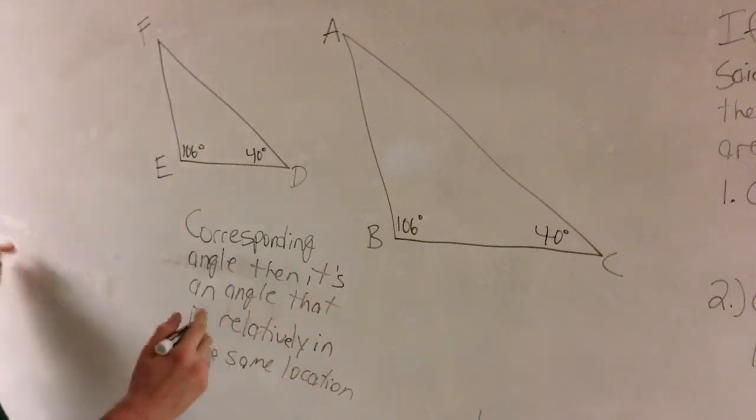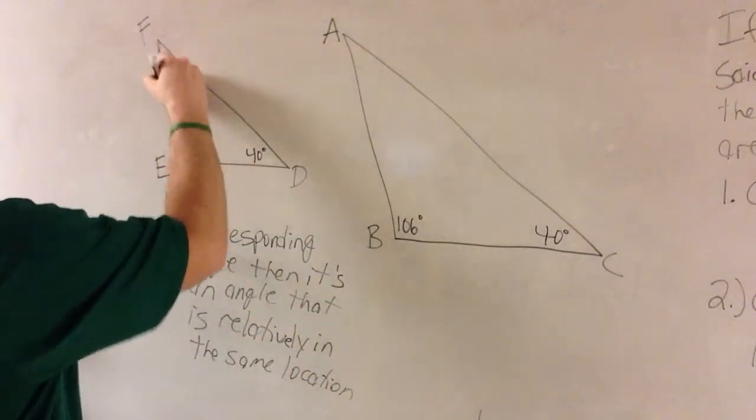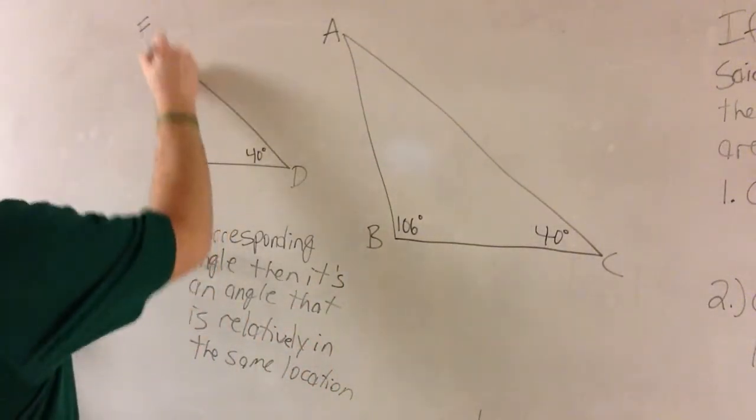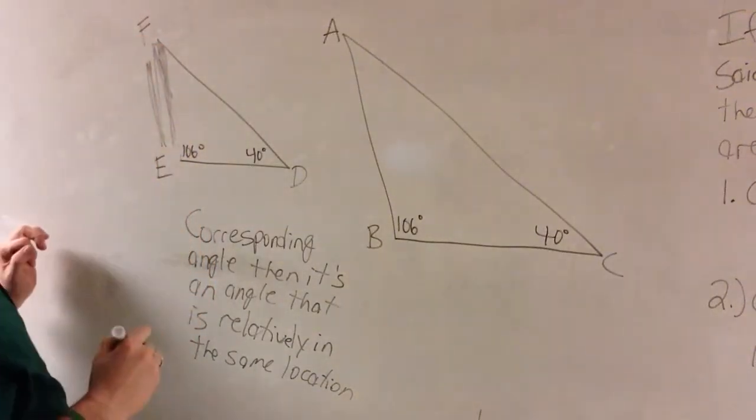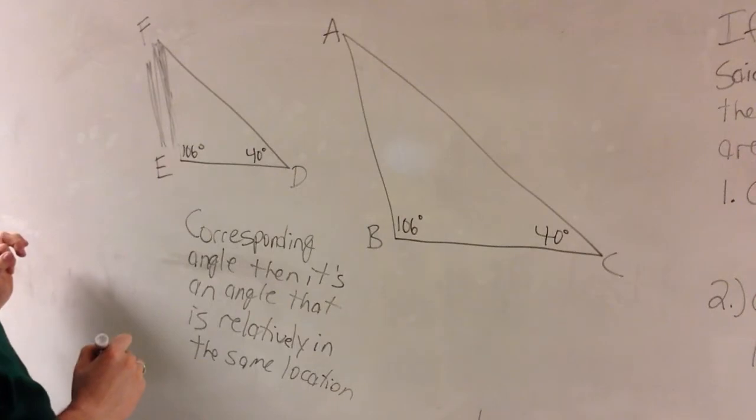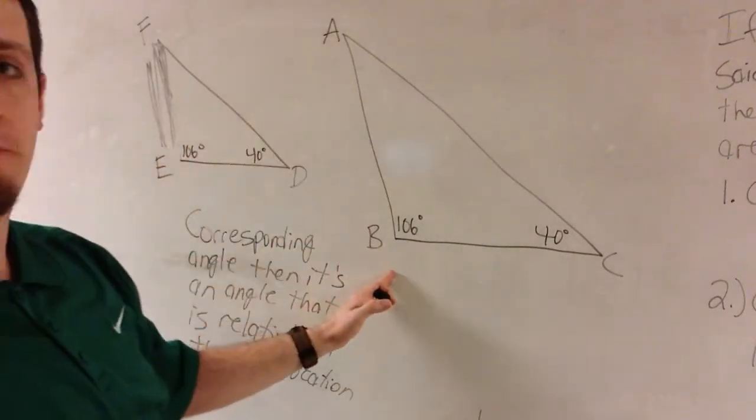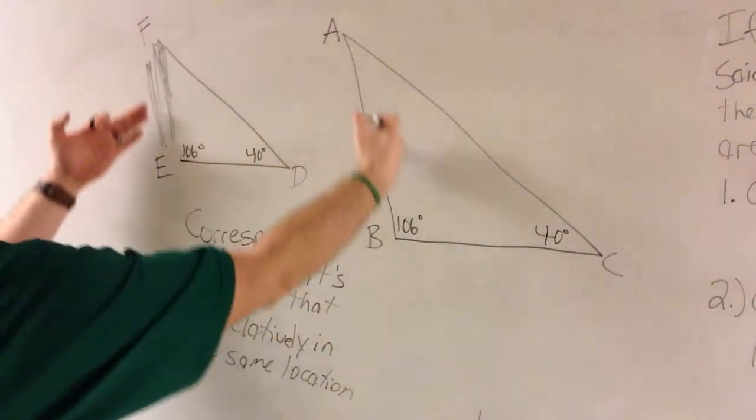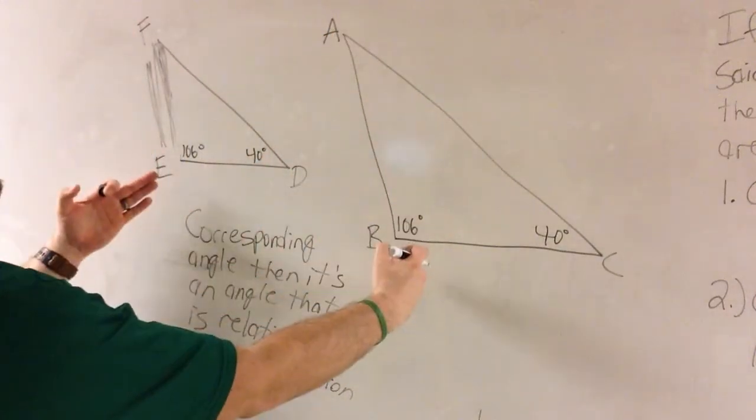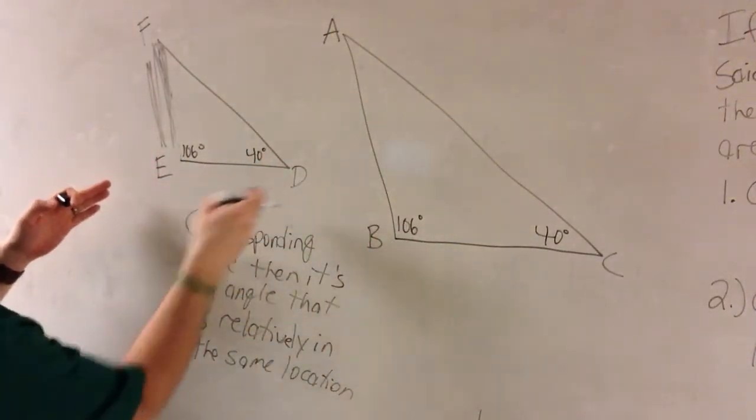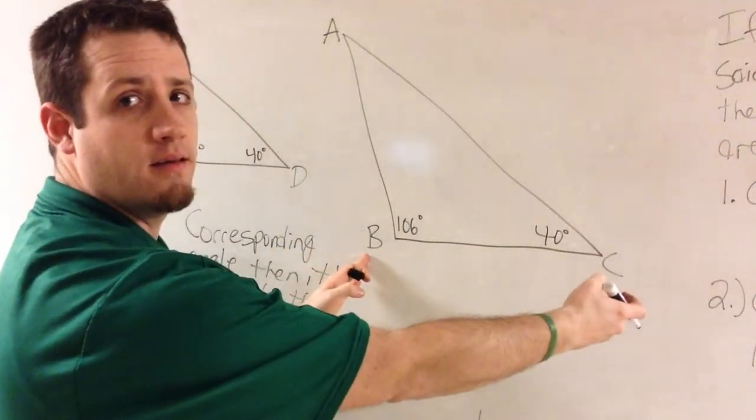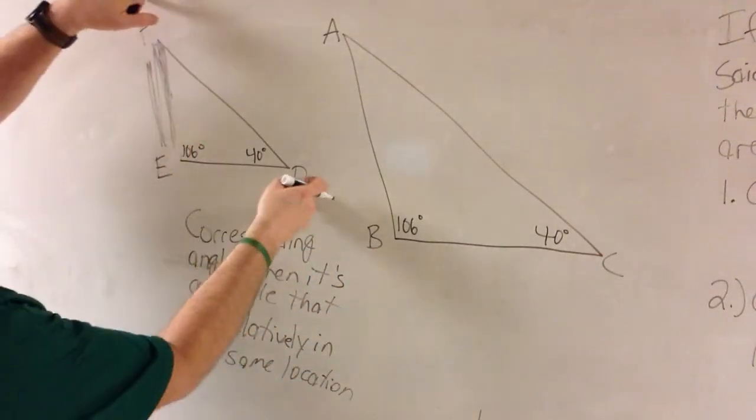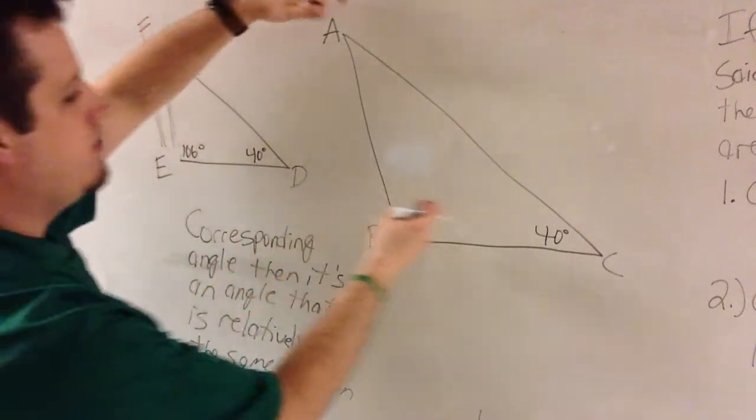Now, let me ask you this real quick. What corresponds with EF? What corresponds with that side right there? That's right, AB. Relatively in the same location. Yes? So what corresponds with ED? That's right, BC does. And then, of course, FD corresponds with AC.